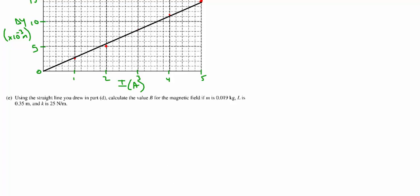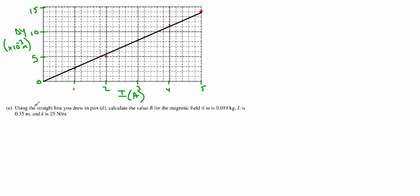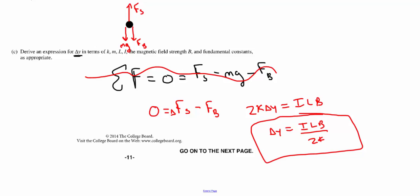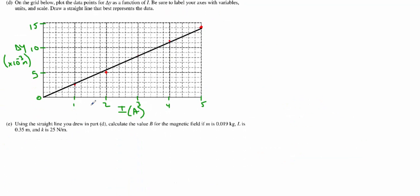Now E is where it's going to get really challenging. It's where we're going to really test the ability for you to do your graphing physics or your math, I should say. And we're going to use this, and read it carefully, using the straight line you drew. We need to calculate the value B for the magnetic field if we know the mass, the length, and this constant. In order to explain this, I'm going to carry over the equation that they had us derive in C. Delta Y equals ILB over 2K. So I'm going to go ahead and write that down. Now look at this. I have delta Y plotted here, and I have I plotted here. If I divide my delta Y over I, I'm looking at my slope, right? Change in Y over X, or my rise over my run. So this is my slope. Well that slope therefore must equal LB over 2K.